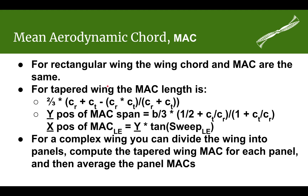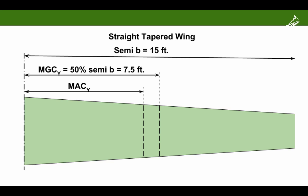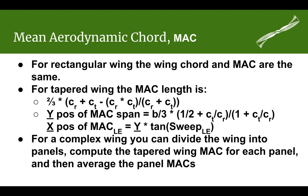But what if you have a tapered wing? Whether it has a sweep or not, there's a pretty simple calculation to determine the length of your mean aerodynamic chord. C sub R is your root chord and C sub T is your tip chord — just plug them into the formula. Generally, the MAC will be just a little bit inboard of half your semi-span. The greater your taper, the farther inboard it will be from that half semi-span point.